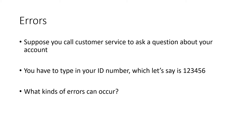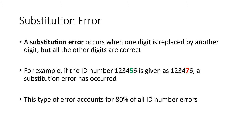Let's imagine that we're calling a customer service line to ask a question about our account. The system prompts us to enter our account number — let's say that account number is 1, 2, 3, 4, 5, 6. What are the kinds of different errors that can happen when we try to enter that into our keypad? One very common type of error is called a substitution error. A substitution error is when one of the digits in our number is replaced by another digit, but all of the other digits are correct.